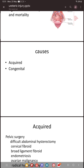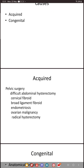Causes for ureteric injury during surgery could be acquired or congenital. Acquired causes include pelvic surgery like difficult abdominal hysterectomy, where there could be a large fibroid present inside the uterus or a cervical fibroid. As we know, the ureter passes two centimeters from the cervix, and a fibroid large enough to displace the ureter can lead to injury if you can't identify it. When dealing with broad ligament fibroids, there is a possibility of injuring the ureter, which passes through the posterior leaf of the broad ligament.